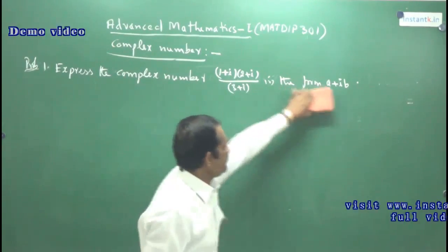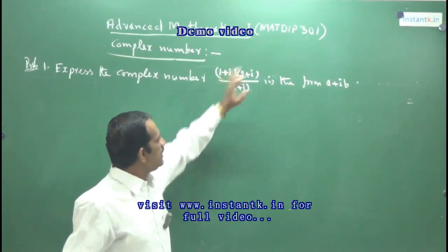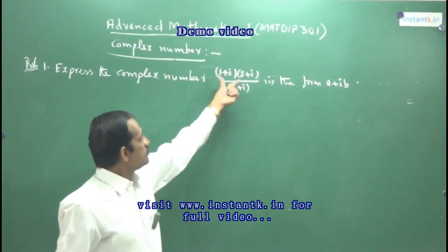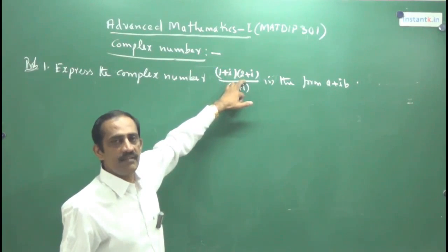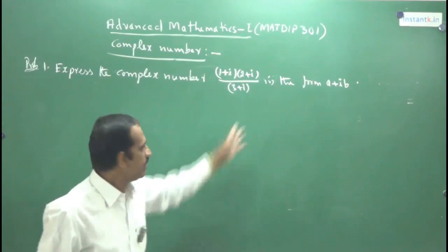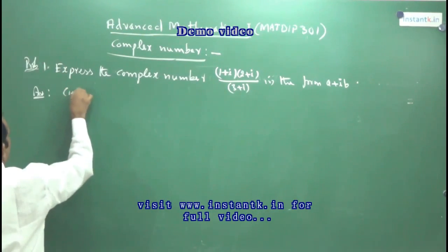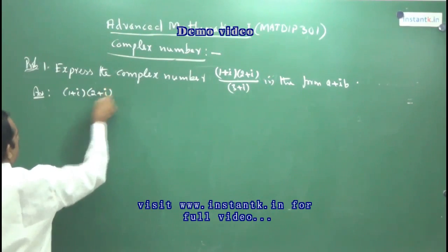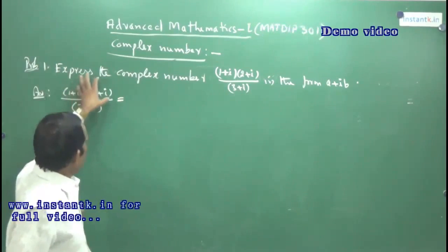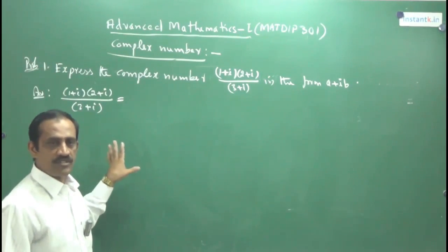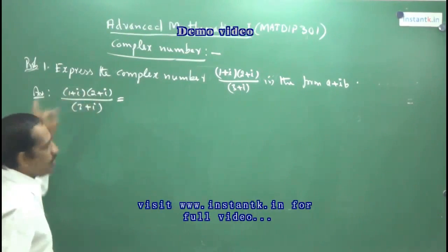When a problem of this type is given, you have to avoid the denominator — the denominator must be a purely real number. For that, you take the conjugate of this and multiply the numerator and denominator by that. But the numerator also has some product. To simplify this, first it is better to write the numerator in terms of x plus iy. You take the given problem: (1 + i) into (2 + i), divided by (3 + i). First write the numerator in terms of x plus iy. Don't take the conjugate here — you take the conjugate only if the complex number is in the denominator. In the numerator, you just multiply these two complex numbers.